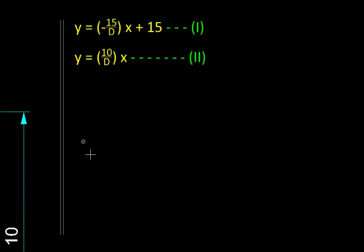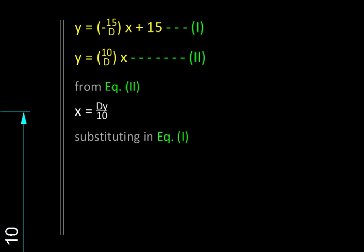Since we are interested in y, the height, we will eliminate x. From equation 2, I am going to write an expression for x and substitute that in equation 1. That will give me this expression on the right hand side, from where the distance d between the bamboos is getting cancelled. That is expected—it is having no bearing on our answer.